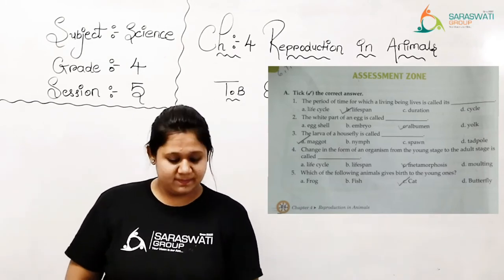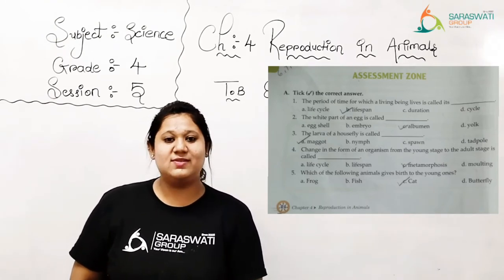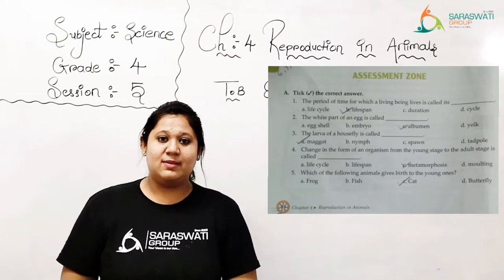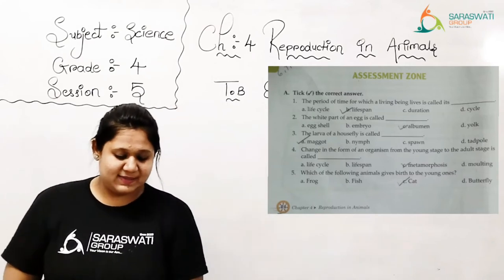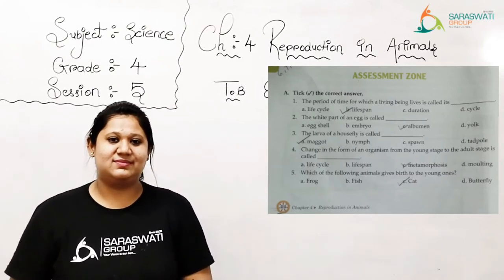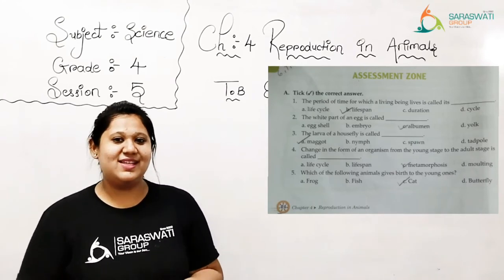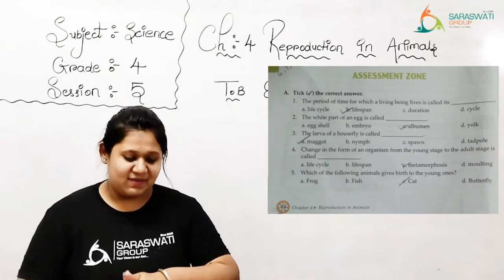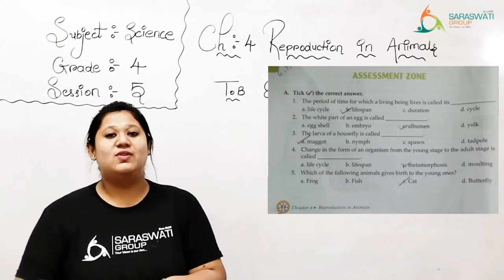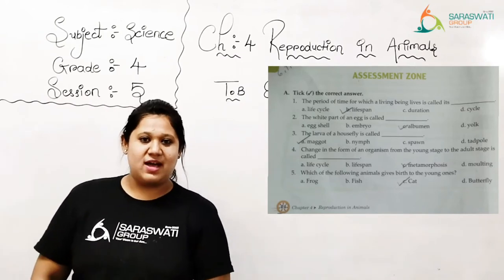Page number 44, question number 1, tick the correct answer. Number 1: the period of time for which a living being lives is called its A) life cycle, B) life span, C) duration, D) cycle. Yes, I think you know the answer kids. Yes, our answer must be B, life span. You are supposed to tick on B, life span.